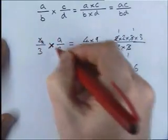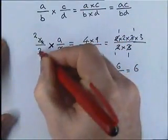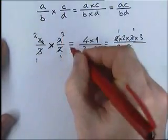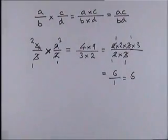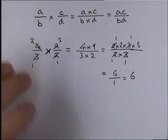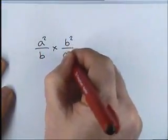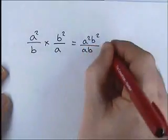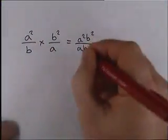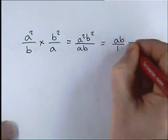Here's an example: a squared b times b squared over a. We could write that as a squared b squared over ab, and then cancel the fraction down by looking for common factors. The common factor is ab, so we can divide the top and bottom by ab and get ab over 1, or simply ab.